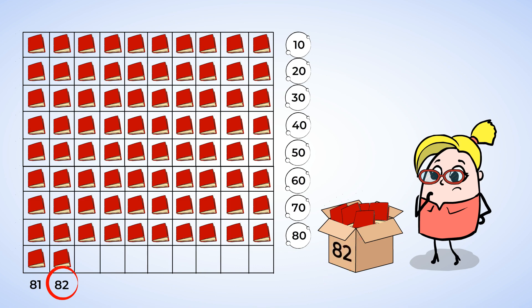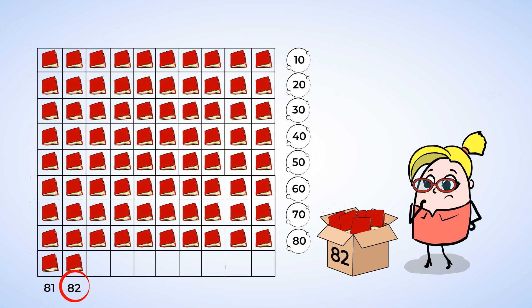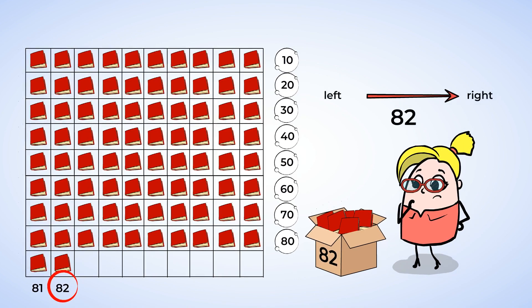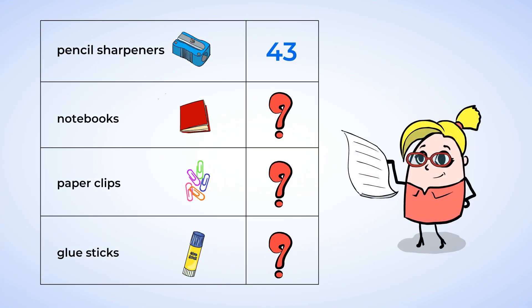It's a good thing we caught the mistake though. It's really important to write the numbers from left to right as you say them. Now we're going to write the number 82 on the list next to where it says notebooks. Nice work.